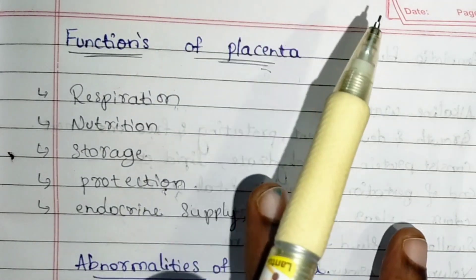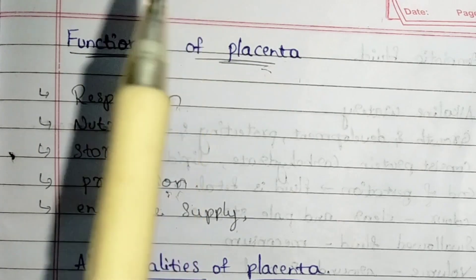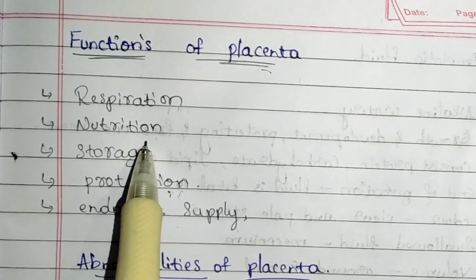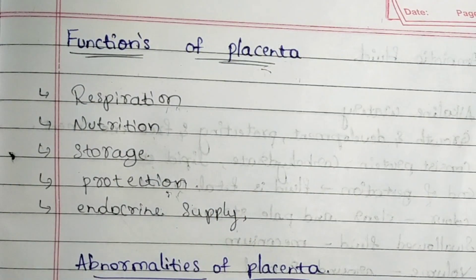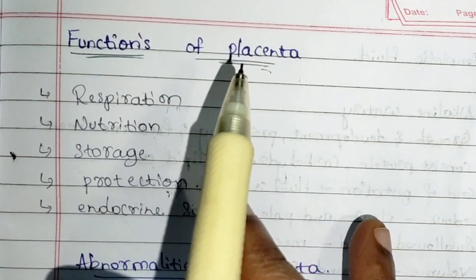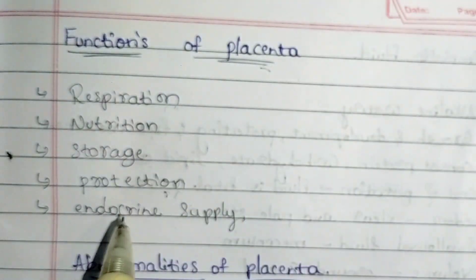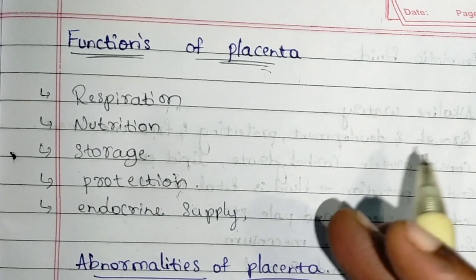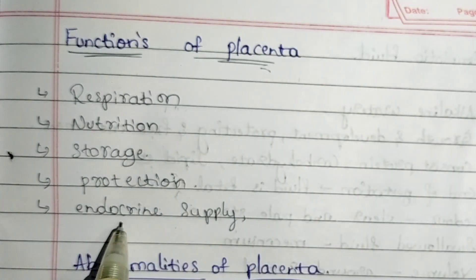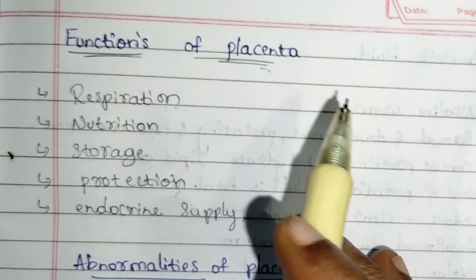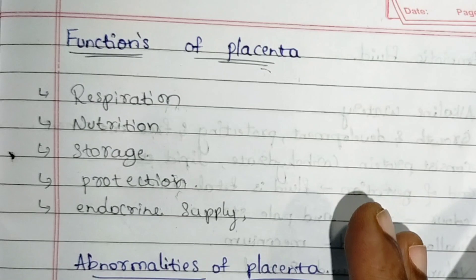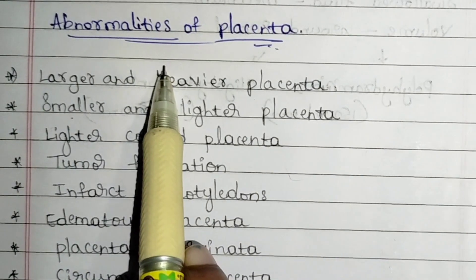Functions of placenta: placenta plays a vital role in the growth and development of the fetus. First, respiration — placenta helps in exchange of oxygen and carbon dioxide between mother and fetus. Next, nutrition — placenta supplies nutrition from mother to fetus. Next, storage — placenta stores glucose and fat and supplies to the baby when needed. Next, protection — placenta acts as a barrier protecting the baby from infection. Next, endocrine supply — placenta supplies hormones like IgG from mother to fetus, which are important for immunity development.